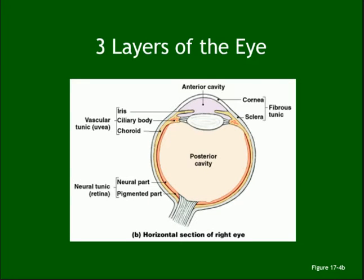The eye has three layers. The outer layer contains the sclera and cornea. The middle layer contains the choroid, ciliary body, ciliary processes, and iris. The inner layer is the neural tunic, which has two layers: pigmented and neural. The important thing is to remember what belongs to which layer.